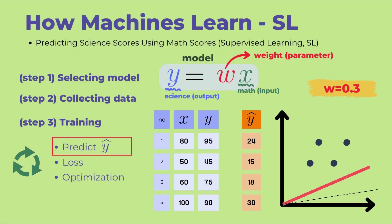When using a W value of 0.3 to predict science scores, the table shows the following results. For the first student, with a math score of 80, the predicted science score is now 24 points. Although there is still some difference from the actual science score of 95, it is an improvement over the previously predicted score of 8 points.